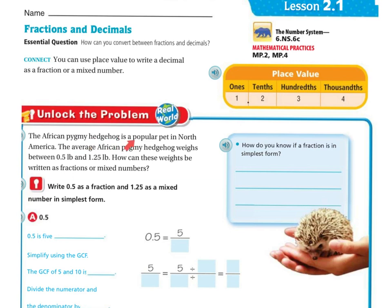The African pygmy hedgehog is a popular pet in North America. The average pygmy hedgehog weighs between 0.5 or 5 tenths of a pound and 1.25 hundredths. How can these weights be written as fractions or mixed numbers?